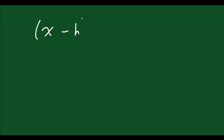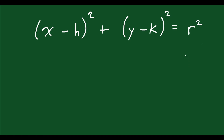Let's talk about the equation of a circle. The general form is (x minus h) squared plus (y minus k) squared equals r squared. Some of these variables represent numbers: h, k, and r, while x and y remain as variables. r represents the radius of your circle.